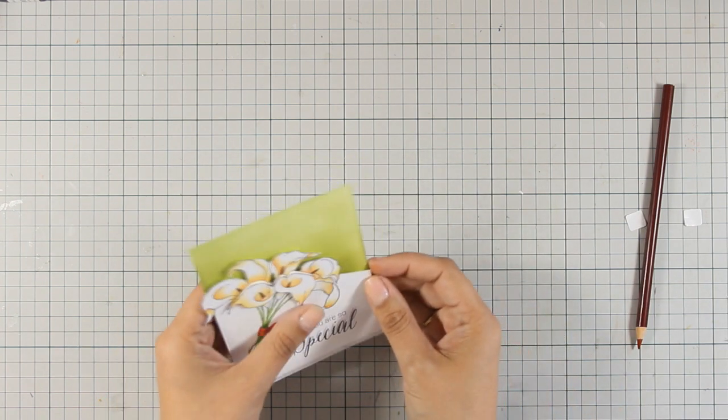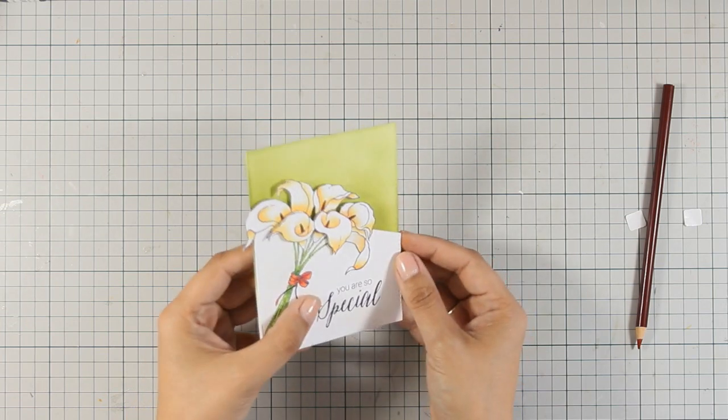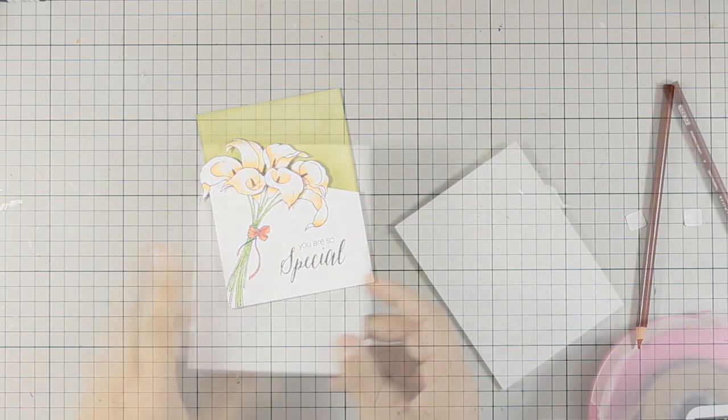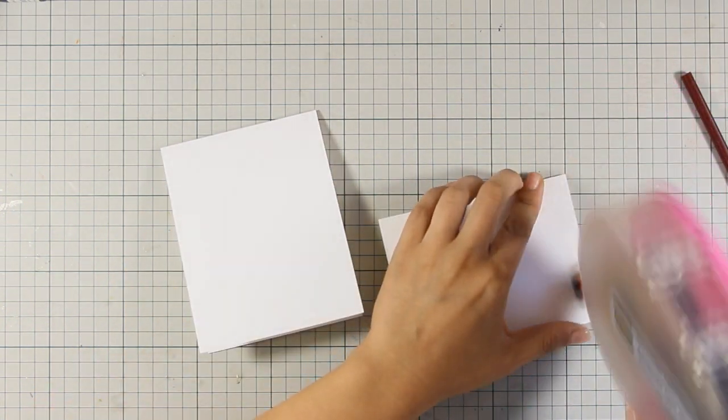I am going to turn the card for you so you can see all the dimension. For my card base I am using a top folding card that is a standard card size, 4¼ by 5½ inches.